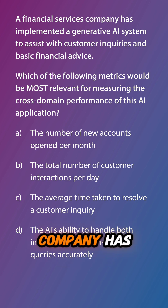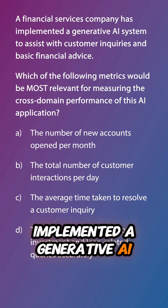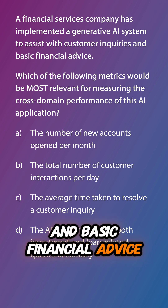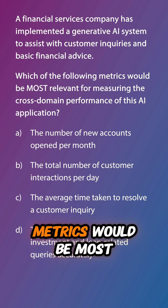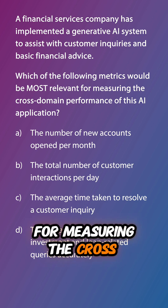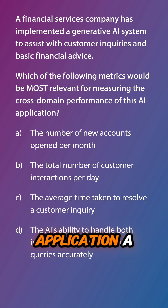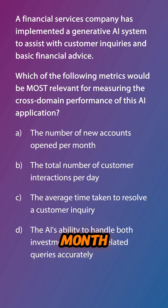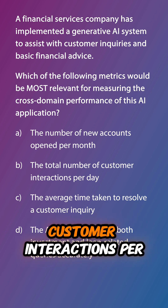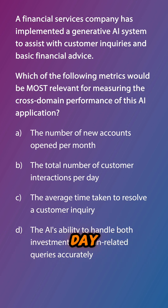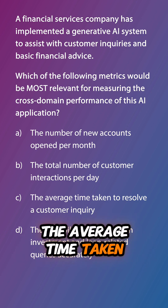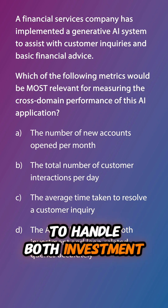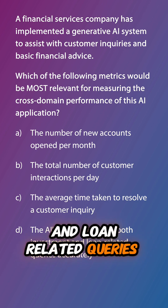Let's do a review question. A financial services company has implemented a generative AI system to assist with customer enquiries and basic financial advice. Which of the following metrics would be most relevant for measuring the cross-domain performance of this AI application? A: the number of new accounts opened per month. B: the total number of customer interactions per day. C: the average time taken to resolve a customer's enquiry. Or D: the AI's ability to handle both investment and loan-related queries accurately.